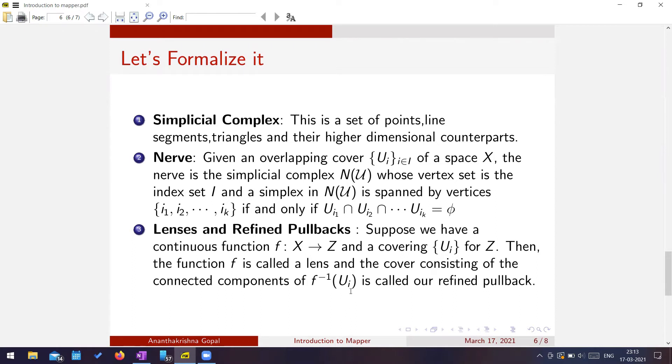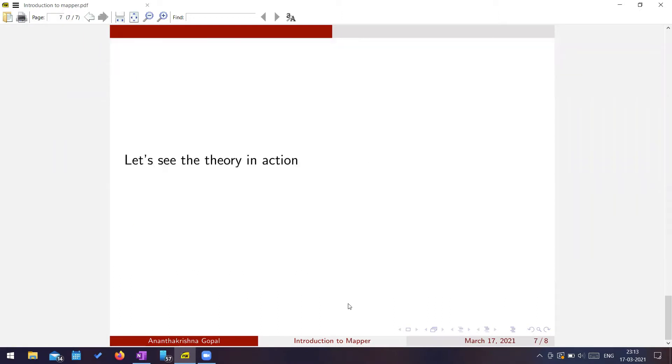So f inverse of Ui gives me an open cover for X. But what I'm going to do is I'm going to sort of refine it. And that's what I mean by talking about refined pullback. And I'm going to refine it in the sense that I'm going to split up all my open sets into the connected components. So my cover for X will consist of various connected components of f inverse of Ui.